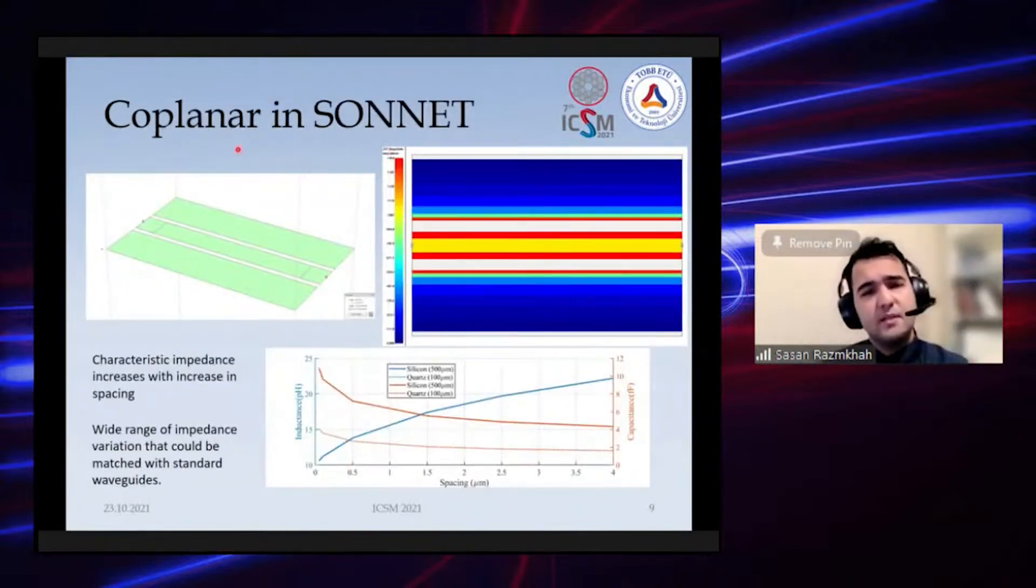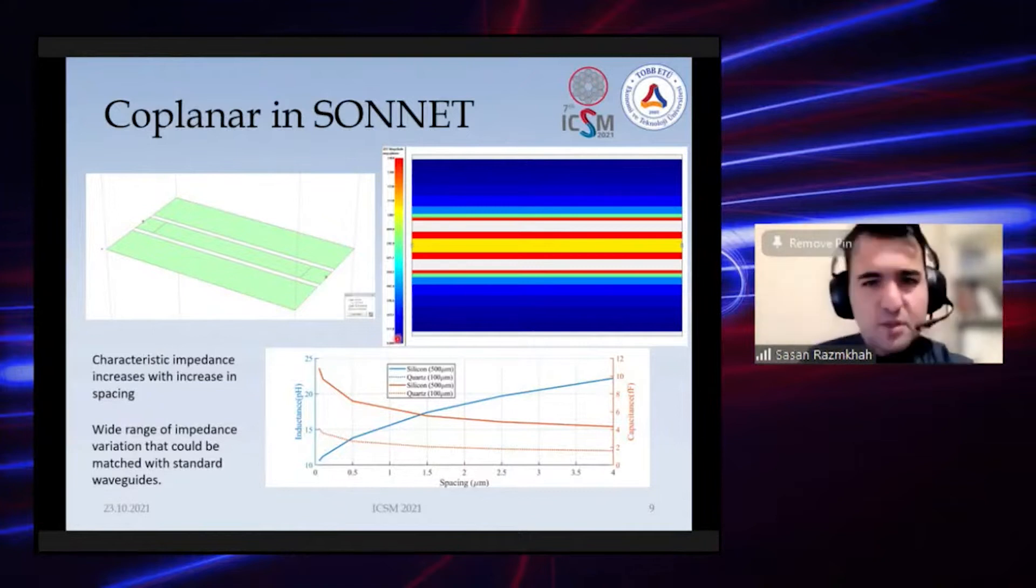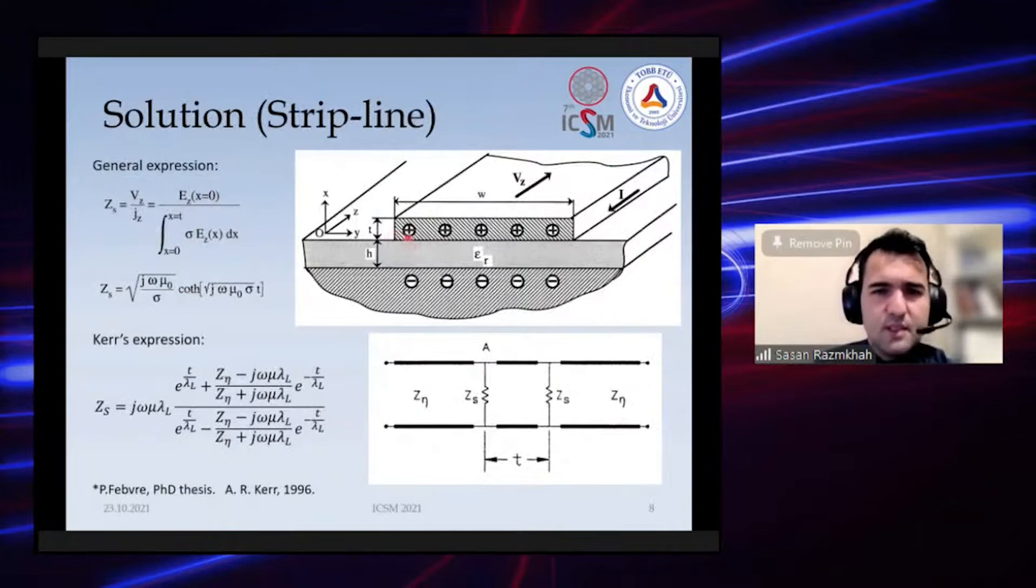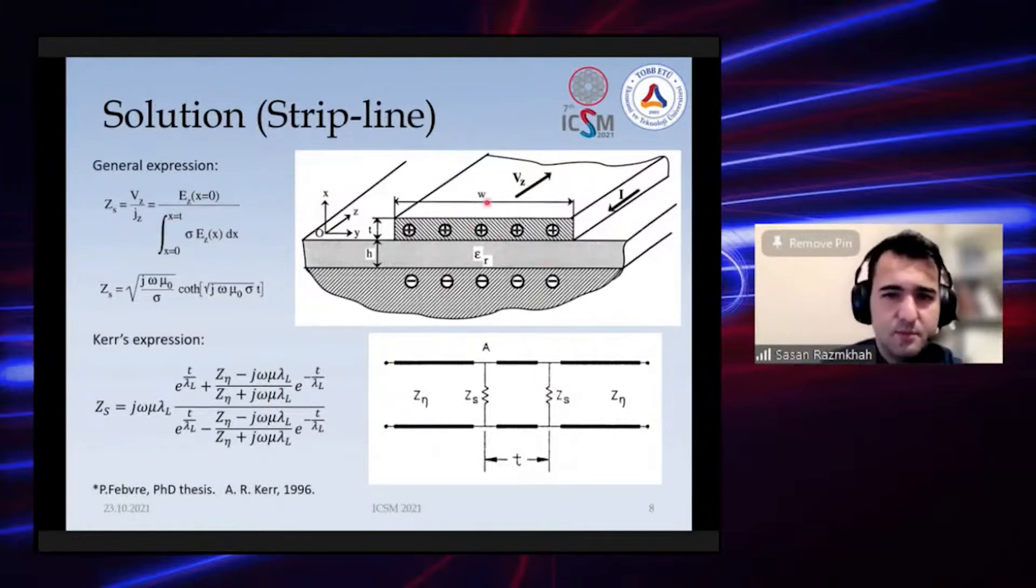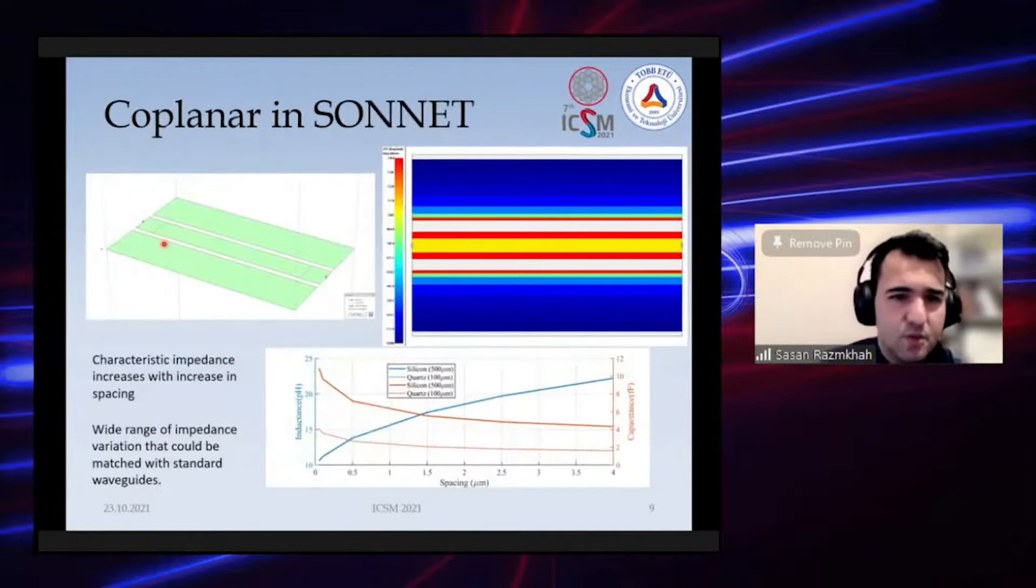We also calculate coplanar impedances for superconductors. The difference between a strip line and coplanar—of course you know that the energy in a strip line is between the ground planes, and for the coplanar the energy is in the gaps since the capacitance...